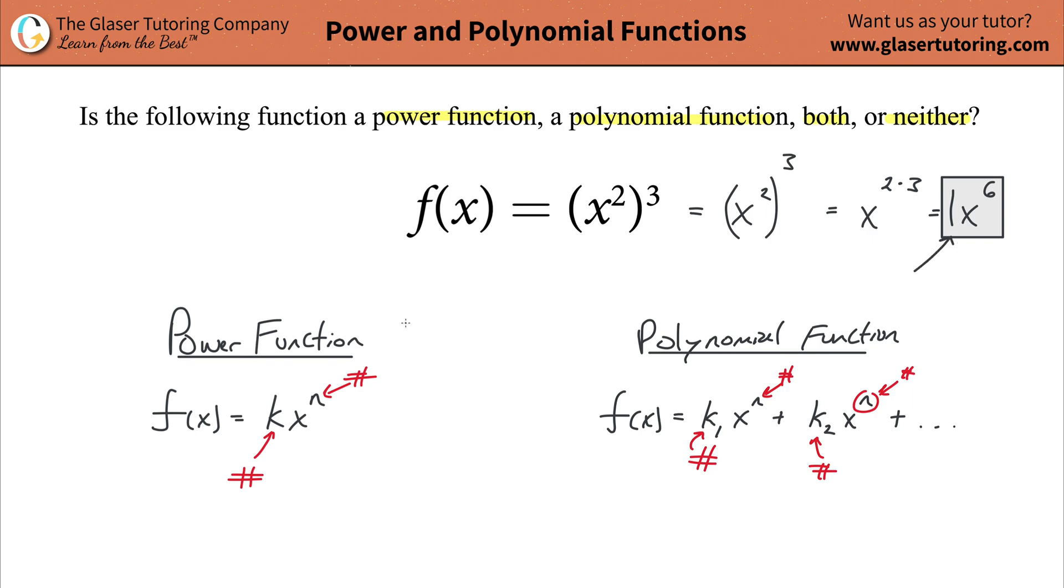In any case, this matches a power function and this actually also matches a polynomial function because it has at least one of those terms. A polynomial, it's a little bit misleading because poly kind of means many, but a monomial, binomial, trinomial, they're all types of polynomial functions. So this is actually an example of both.